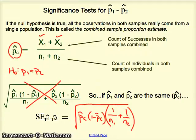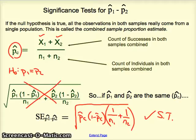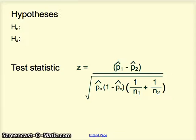The significance test standard error uses P-hat combined times 1 minus P-hat combined times the sum of 1 over the first sample size plus 1 over the second sample size. This is an algebraic rewriting of the confidence interval standard error under the assumption that there aren't separate proportions — that one proportion describes both populations. This is the standard error calculation for significance tests, and it's different than the standard error for confidence intervals. You need to make a mental note of that, as it will cost you points on assessments and the AP test.